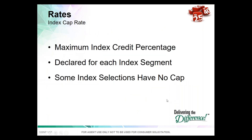Another method of control is a cap rate — the maximum amount that the company can credit in a given segment. It's declared in advance for each segment, and once the segment starts, the cap rate can't change. If the cap rate were 10% when the segment starts and cap rates subsequently change, the client is locked into that cap rate until the segment is over. There are some index selections that have no cap at all — for example, an index segment selection that runs only on a spread or participation rate.